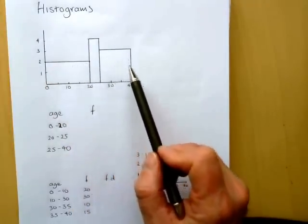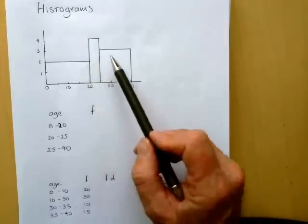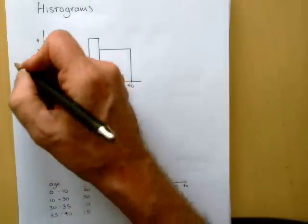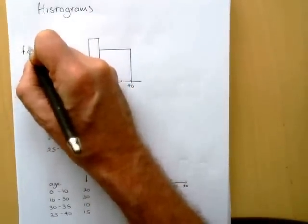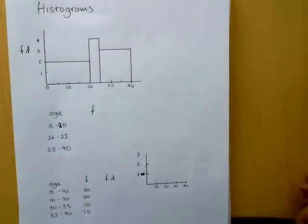So we can see I've got a diagram here, but it's not really telling me anything about the frequencies. I know something about ages, and I've got this variable on the vertical axis called FD.